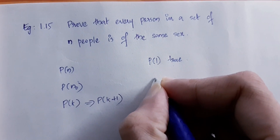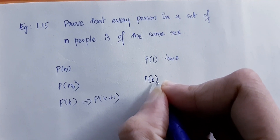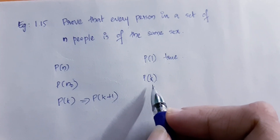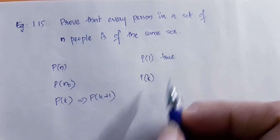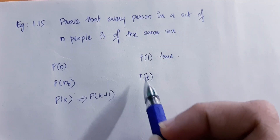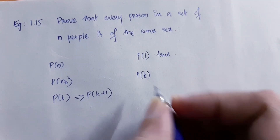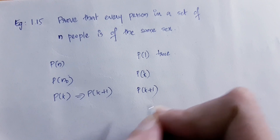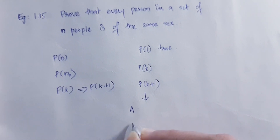If P of k is true, we will assume some people. If you have a set of K people satisfying this condition, and this statement was true, then we assume P of k is true. We want to see P of k plus 1 is true. We consider two sets A and B.